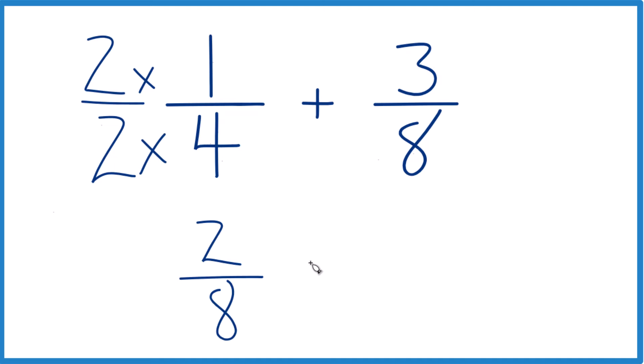But we have our 3 8ths here. And with fractions, we're going to just keep that denominator the same. And then we add the numerators. 2 plus 3 is 5.